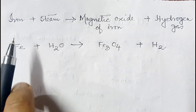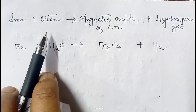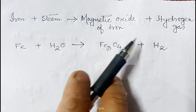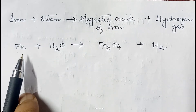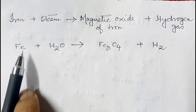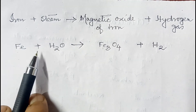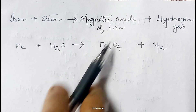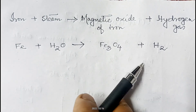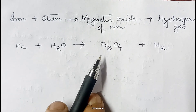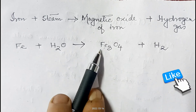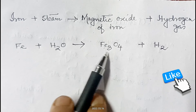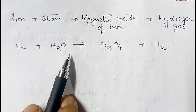Let's look at another example. Iron reacts with steam to form magnetic oxide of iron and hydrogen gas. In terms of symbols and formulae: Fe + H₂O → Fe₃O₄ + H₂. This equation is not balanced — the number of iron atoms on the reactant and product sides are not the same.